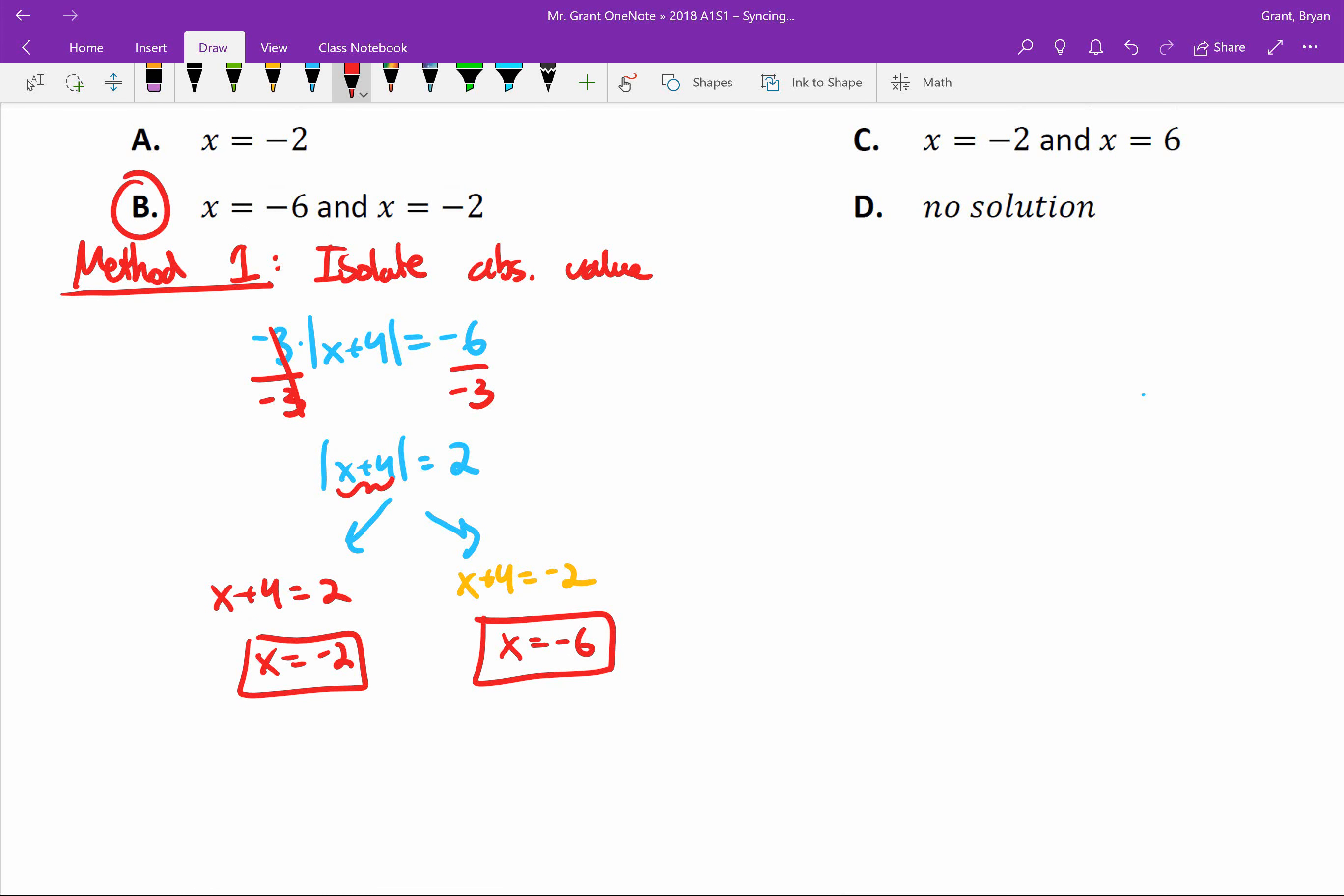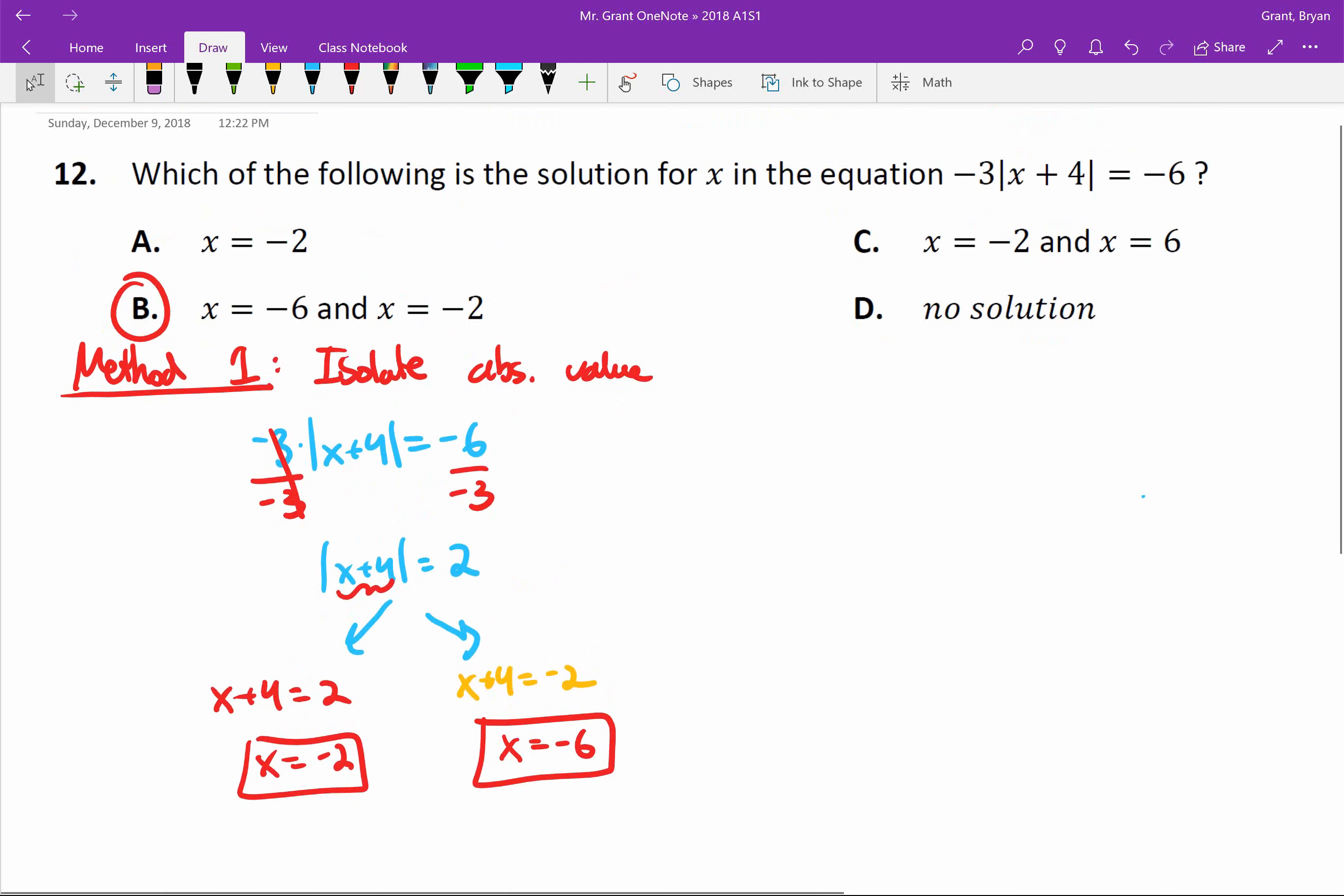Now we discussed last time that you should always, always, always check your work for absolute value, and it turns out when you check these answers you will get the right answer. The left side will be equal to the right and you are set.